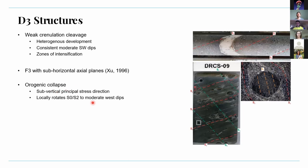D3 was first recognized by Zoo in the 90s. It developed a weak crenulation cleavage shown by the green lines on the thin section, and Zoo also describes sub-horizontal axial plane F3 folds. D3 is inferred to be a period of orogenic collapse where the principal stress direction was sub-vertical. Zoo states there is a top-to-the-east sense of shear which locally rotated S1 and S2 to moderate west dips.